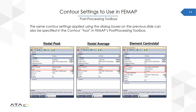You can also achieve these same settings in FEMAP's post-processing toolbox. For nodal peak, set the type to nodal and data conversion to maximum value. For nodal average, use nodal and average. For element centroidal, change the type to elemental and for data conversion select no average centroid only.